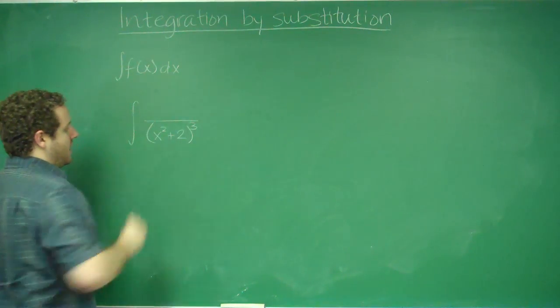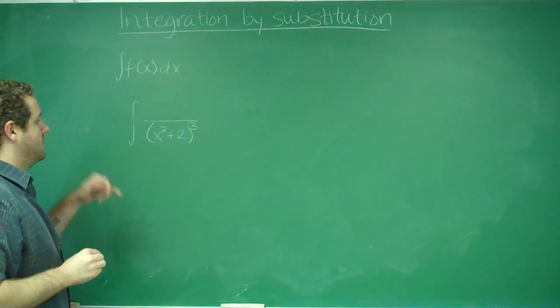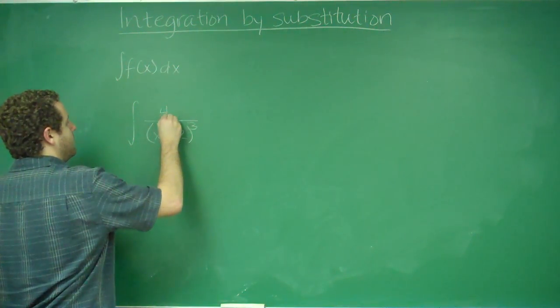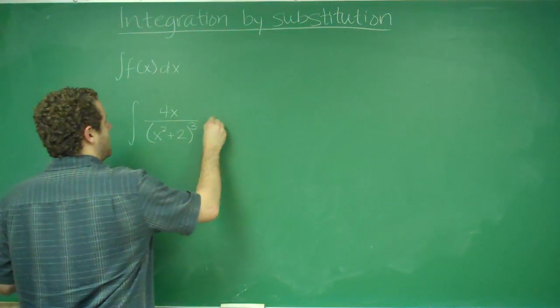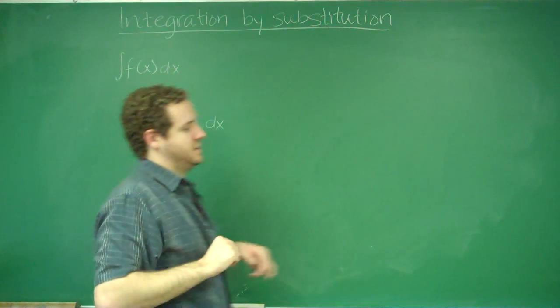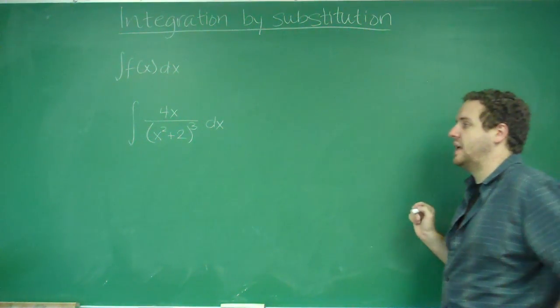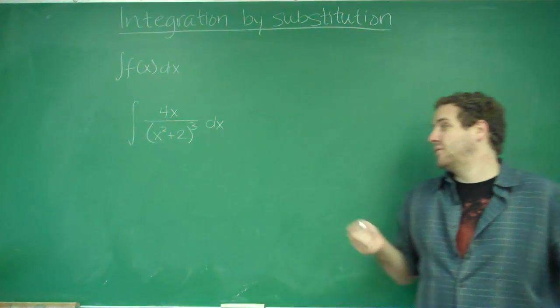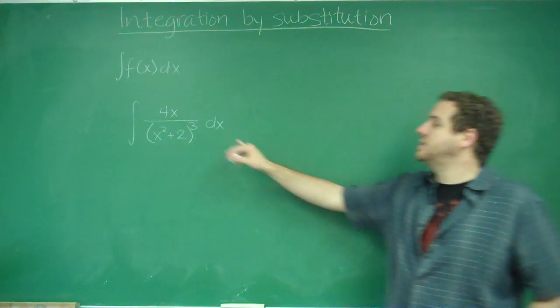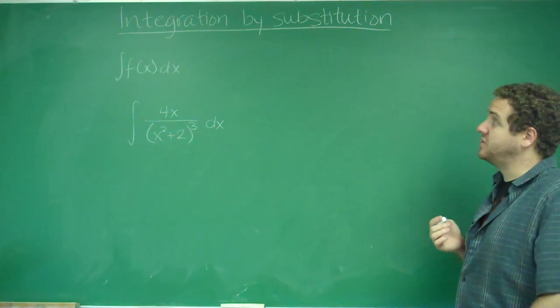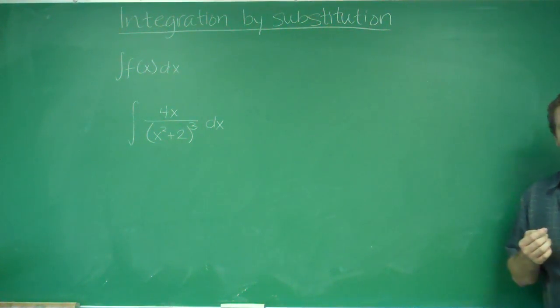Let's say we had x squared plus 2 to the third power on the bottom, and I had 4x on the top, and I wanted to be the antiderivative of this function. Well, I certainly can't use any of the rules, like power rule. I can't really separate this, because if I cubed this, I would have to get a whole bunch of terms. It wouldn't really work. You have to use integration by substitution to solve this.